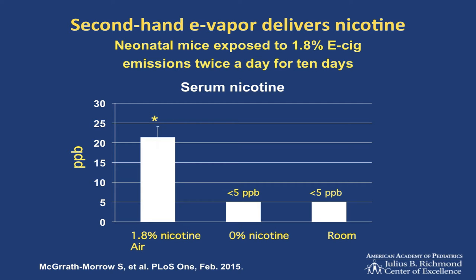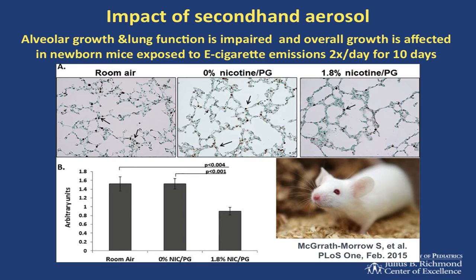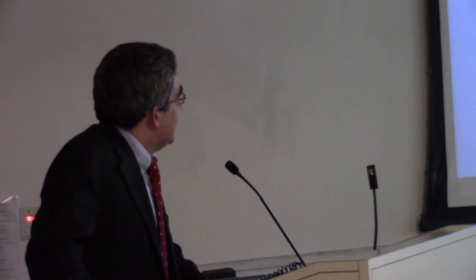Secondhand e-vapor delivers nicotine. This comes from studies by Sharon McGrath-Morrow at Johns Hopkins. Newborn mice exposed to 1.8% e-cigarette solution emissions twice a day for 10 days have measurable levels of nicotine in their blood. When you expose these mice to the secondhand aerosol from e-cigarettes, they also have decreased alveolar growth in their lungs and decreased lung function. Their overall linear growth is affected. The same kind of effects we see from combustible cigarettes and secondhand smoke are also seen from electronic cigarette secondhand vapor. People will say you don't have data that proves they harm children. I would maintain that if they harm newborn mice, we really don't need to wait to see if they harm children. The presumption ought to be that if they're not proven safe, we ought not to be exposing children to them.